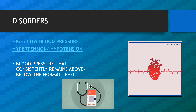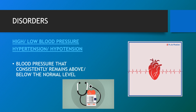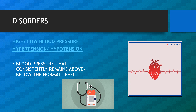Hypertension is high blood pressure and is a serious condition because it makes the heart work harder to pump blood into the body. If not controlled, it can result in an increased risk of heart attacks, strokes and kidney failure. Similarly, hypotension is low blood pressure.